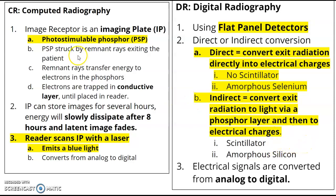Your CR is going to have the imaging plate — that photostimulable phosphor, or PSP. Your PSP plate has to go into the reader. The reader scans it with a laser and it's going to emit that blue light. Remember, you have to process that cassette within eight hours. Your image starts to fade after eight hours.